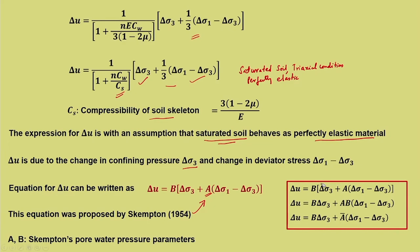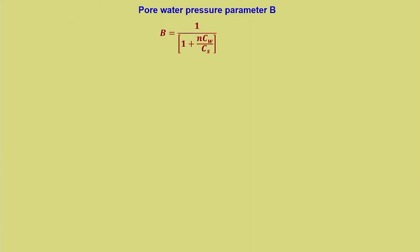A and B are popularly known as Skempton's pore water pressure parameters. The same equation can be written as: delta U equals B times delta sigma_3 plus A-bar times (delta sigma_1 minus delta sigma_3), where A-bar equals A times B. This is an alternate way of representing pore water pressure using an overall pore pressure parameter A-bar.